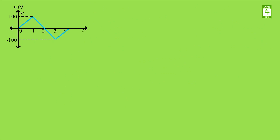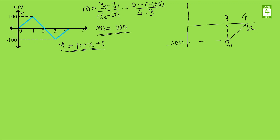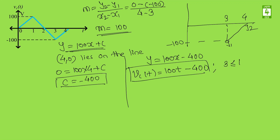Finally, the equation of the remaining line is between 3 to 4. The slope = (y2 - y1) / (x2 - x1) = (0 - (-100)) / (4 - 3) = 100. So y = 100x + c. In order to find the y-intercept we consider point (4, 0) lying on the line: 0 = 100(4) + c, so c = -400. The equation becomes y = 100x - 400, where y is the voltage axis and x is the time axis, valid between 3 to 4.